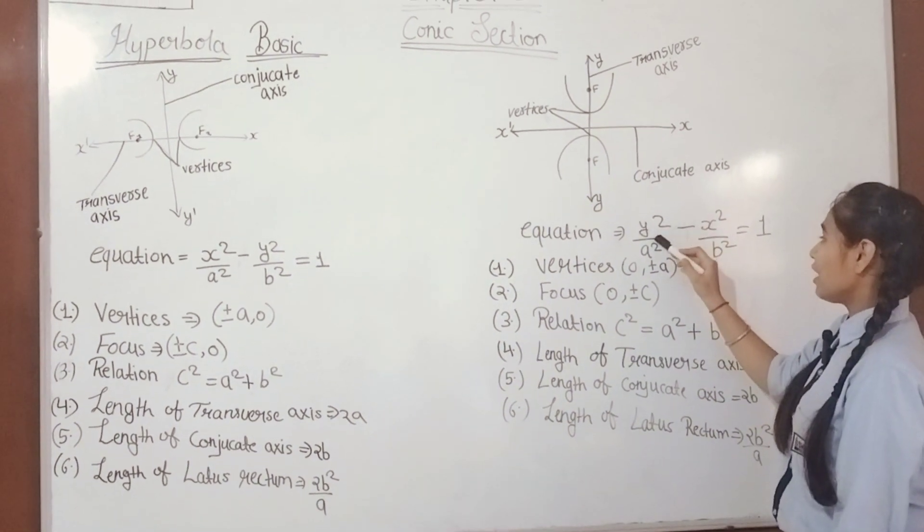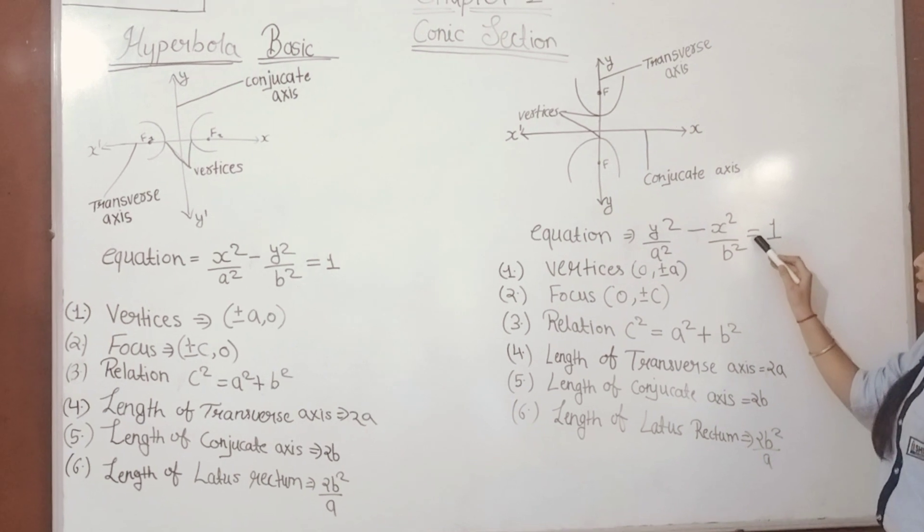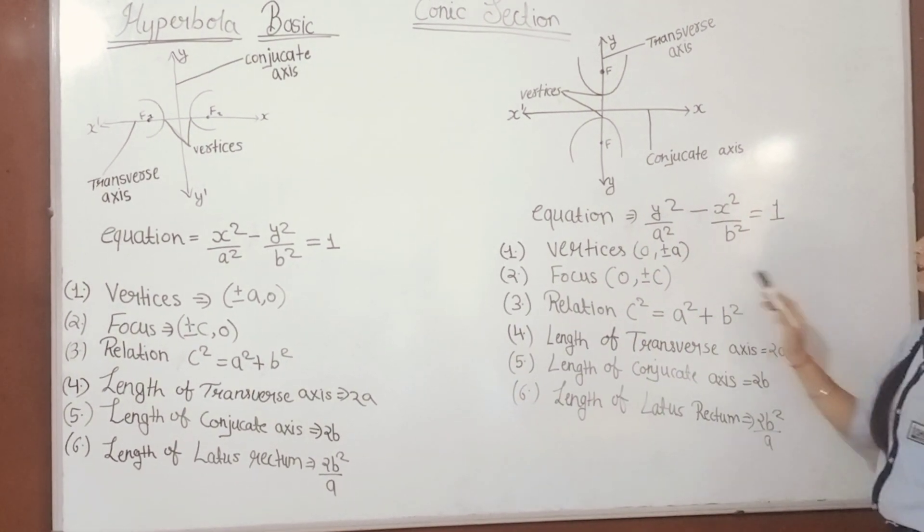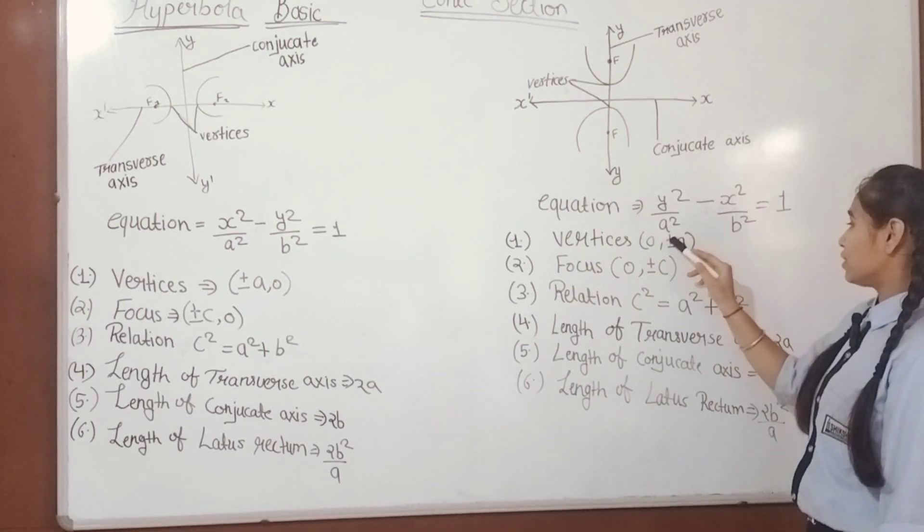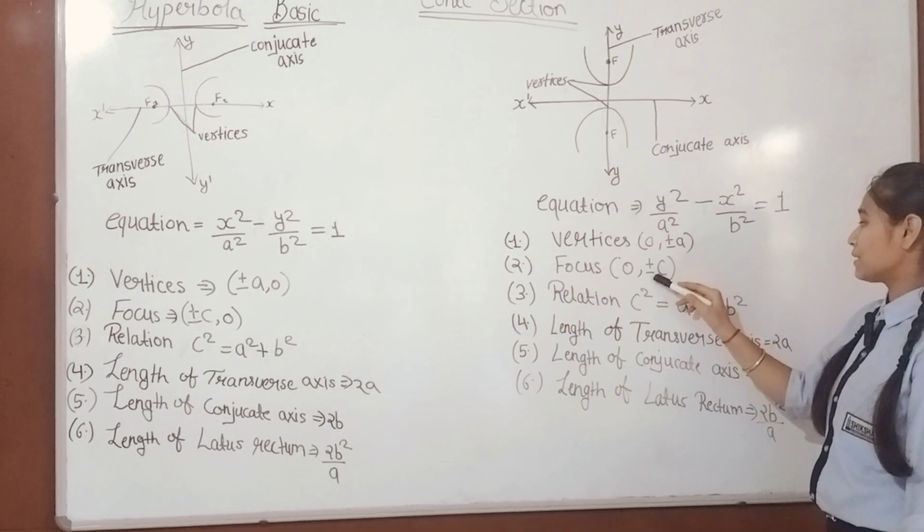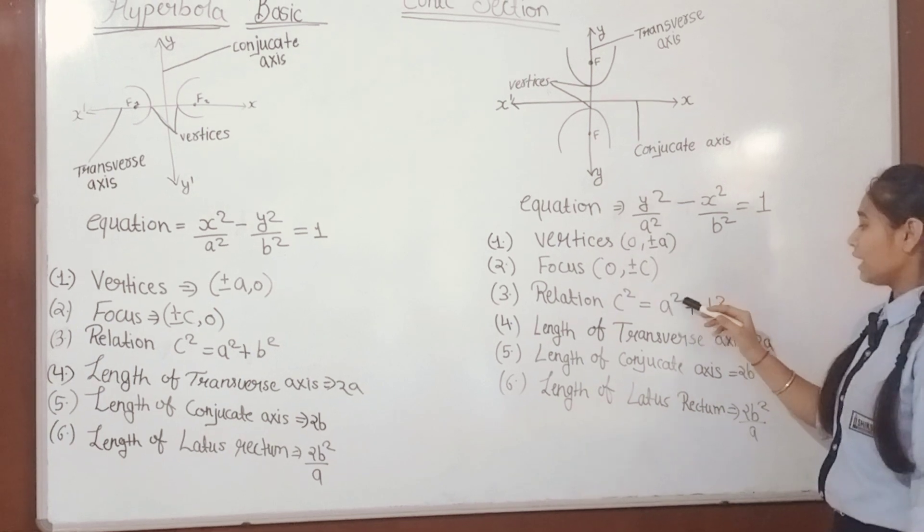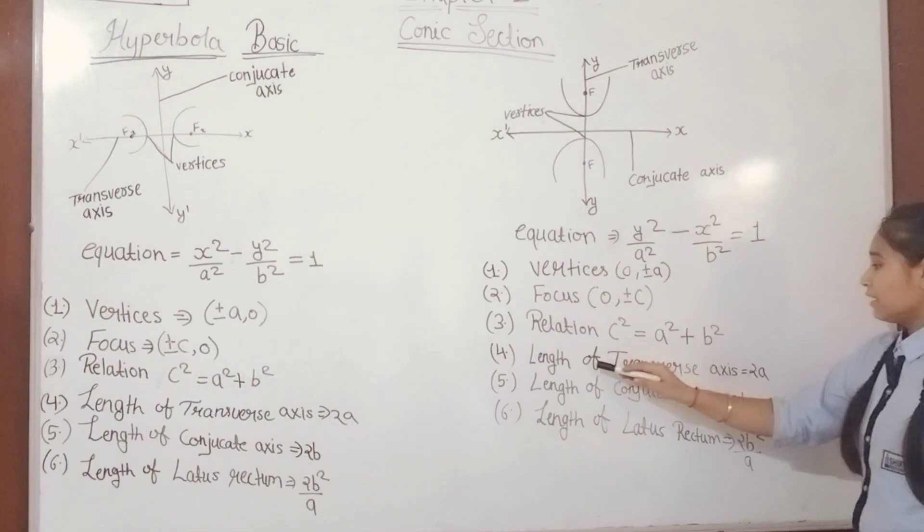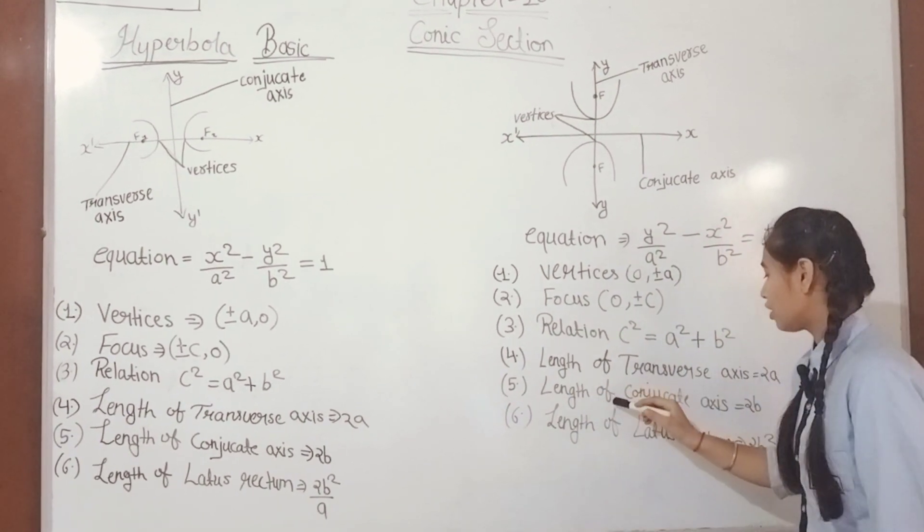y² / a² - x² / b² = 1. Then apply these formulas: vertices (0, ±a), foci (0, ±c), relation c² = a² + b², length of transverse axis 2a, length of conjugate axis 2b.